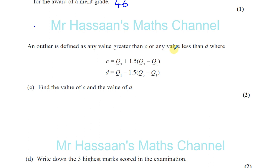Now Q3, remember, is the upper quartile, which was 46. And Q1 is the lower quartile, which is 30. Okay, and so that's what we need.